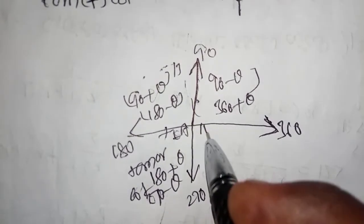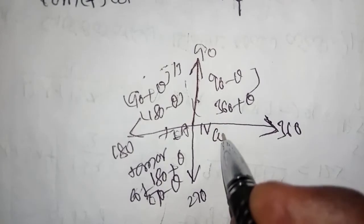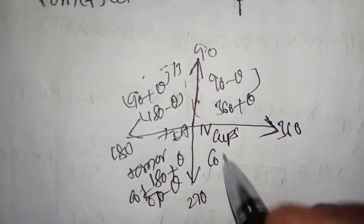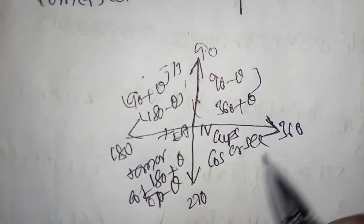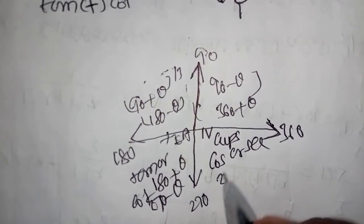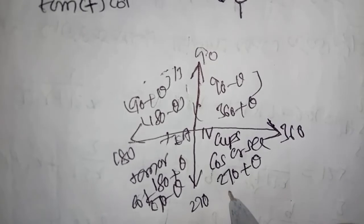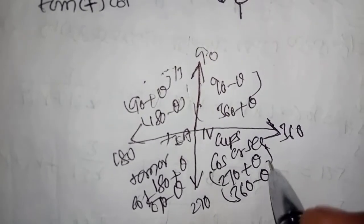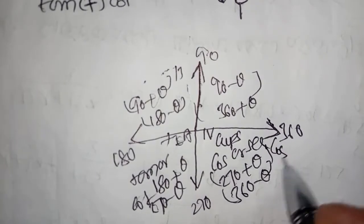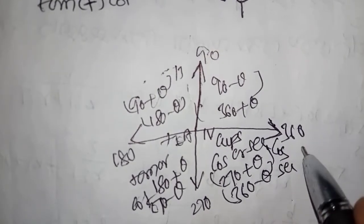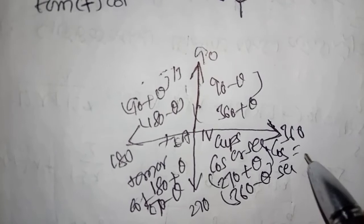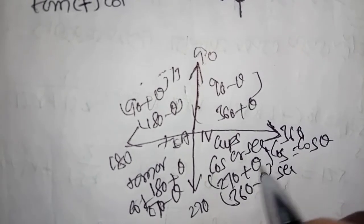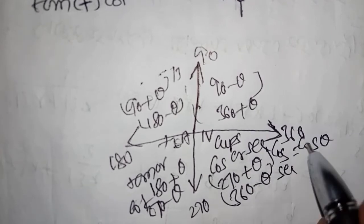Here we have 270 to 360 — this is the 4th quadrant. Cosine is plus. Here we have 270 plus theta: this is cosine, this is plus cosine theta. For 360 minus theta, this is the 4th quadrant. Here we have cos and sec. For 270 plus theta, we have sin theta.